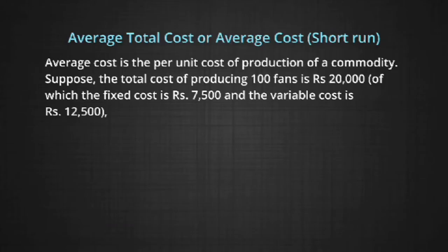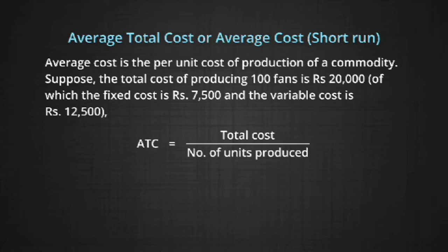Average total cost, or average cost: the average total cost is the per unit cost of production of a commodity. We calculate it by dividing the total cost by the number of units produced. Suppose the total cost of producing 100 fans is 20,000 rupees, of which 7,500 is the fixed cost and 12,500 rupees is the variable cost. ATC equals 20,000 divided by 100, giving us 200 rupees.